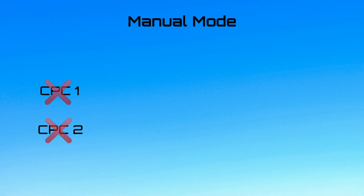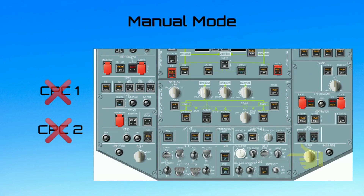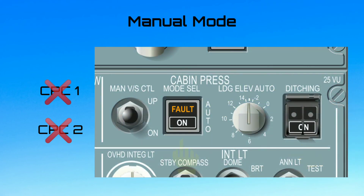Now let us look at the manual mode. The manual mode is automatically selected when both CPCs fail. It can also be physically selected from the mode selector pushbutton on the pressurization panel. In manual mode, the outflow valve is controlled from the manual motor via the MAN-VS control switch.